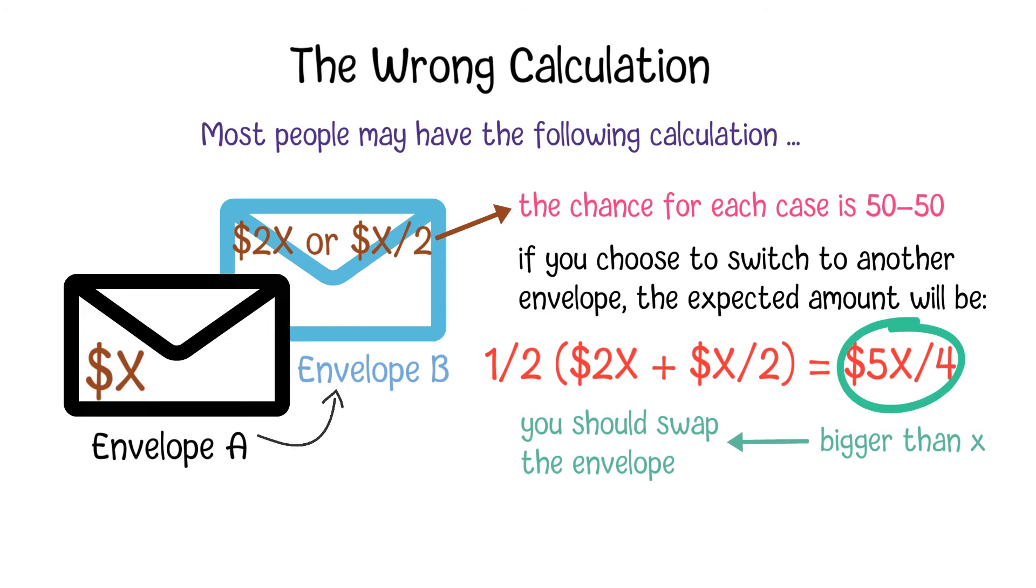If you are given another chance to swap envelopes again, you will have the same reason to switch back. Then you will swap it the third time, and so on. You will end up in an infinite loop of swapping. What's wrong with this calculation?